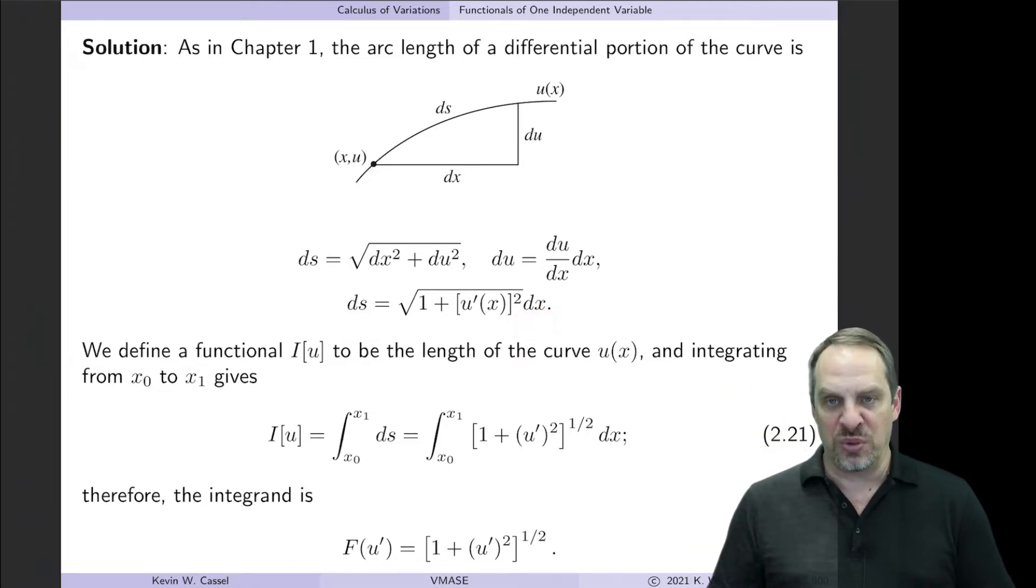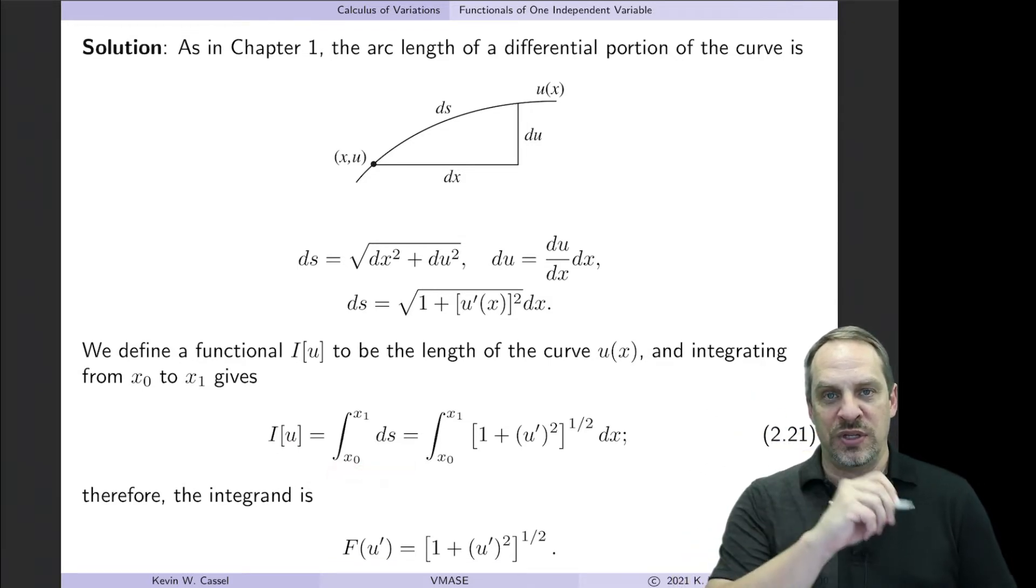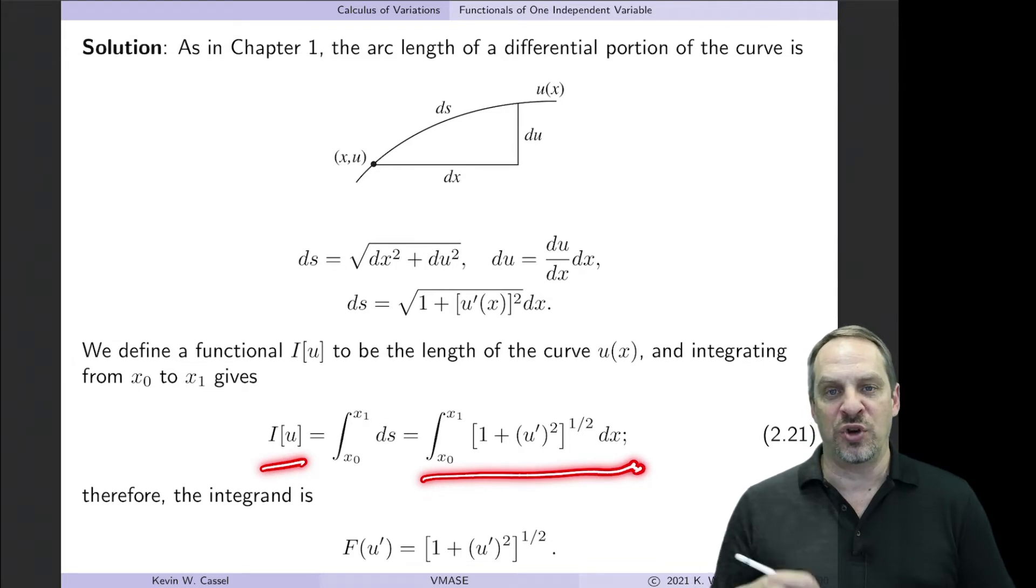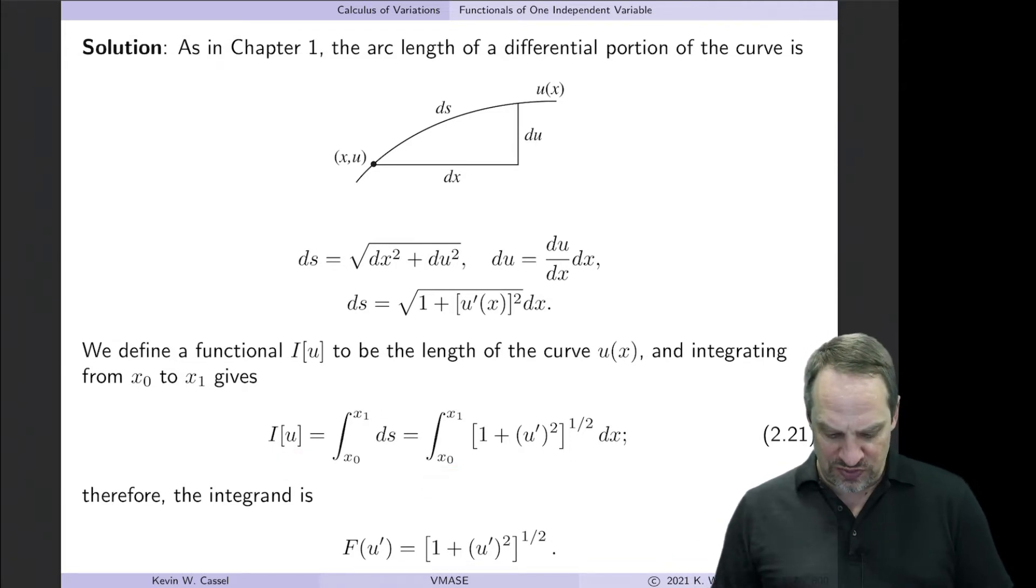So I want to formulate my functional, which is going to be the total length of my function u(x). So I is the sum of all the little ds's from the beginning to the end, from me to my lunch. That's the integral from x0 to x1 of ds. But now we have this alternative expression for the arc length ds. It's the square root of 1 plus u prime squared times dx. So this is our functional. That's the functional for which we want to determine the u(x) that minimizes this functional.